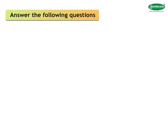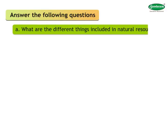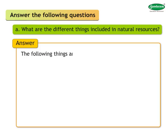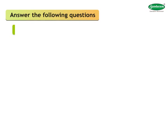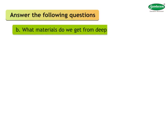Answer the following questions. A: What are the different things included in natural resources? Answer: The following things are included in natural resources — rocks, soil, air, minerals, plants, water, and animals. B: What materials do we get from deep inside the earth?